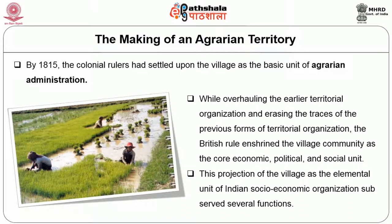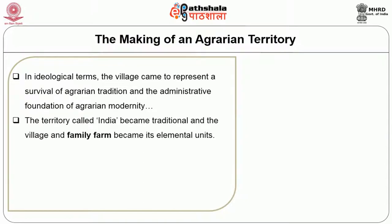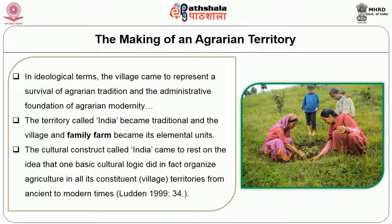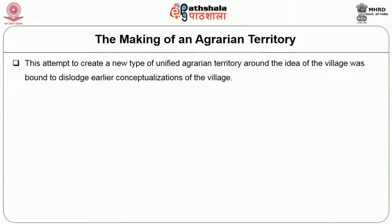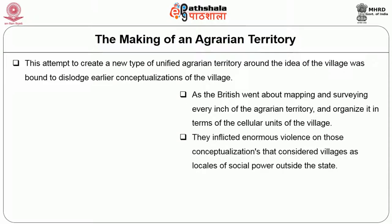This projection of the village as an elemental unit of Indian socio-economic organization subserved several functions. In ideological terms, the village came to represent a survival of agrarian tradition and administrative foundation of agrarian modernity. The territory called India became traditional, and the village and the family farm became its elemental unit. The cultural construct called India came to rest on the idea that one basic cultural logic organized agriculture in its constituent village territories from ancient to modern times. The British went about mapping and surveying every inch of agrarian territory, organized in terms of cellular unions of the village.